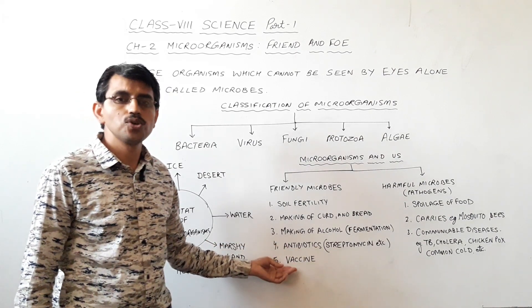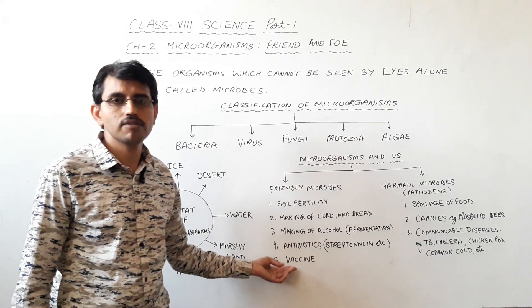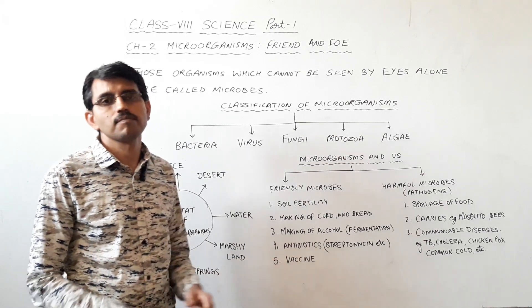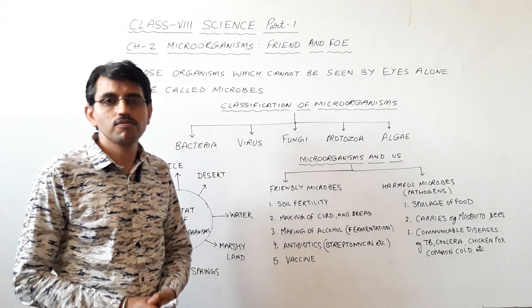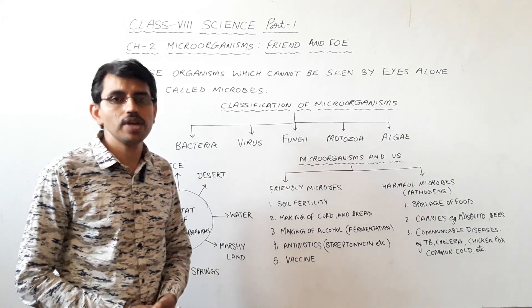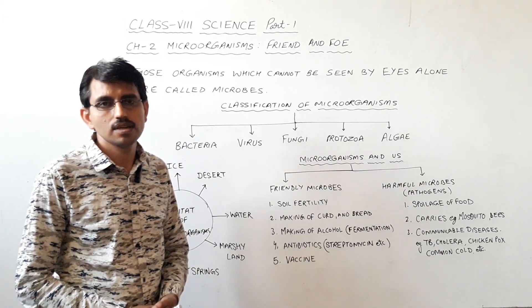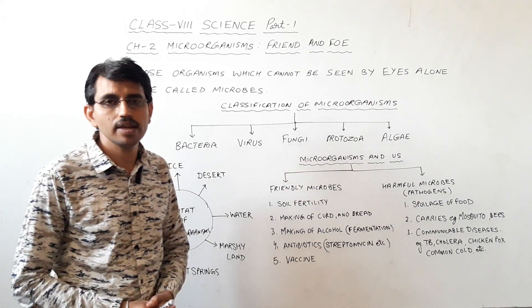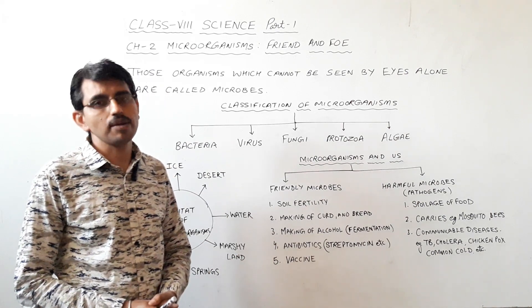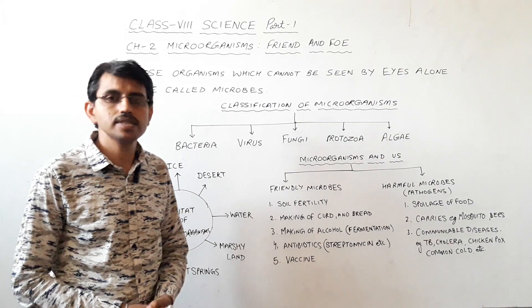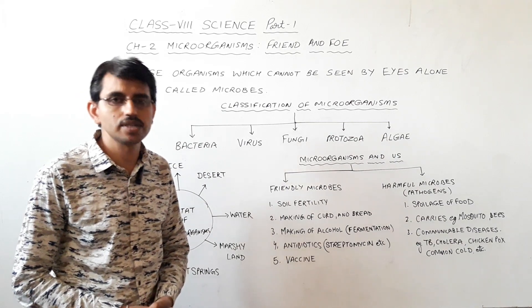Another important friendly use of micro-organisms is the vaccine. A vaccine is the preparation of dead or weakened pathogens which do not actually cause disease, but when injected into our body, they provoke our immune system to form antibodies. These antibodies then protect us from harmful infectious agents.